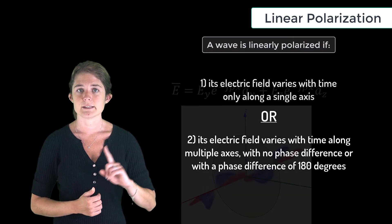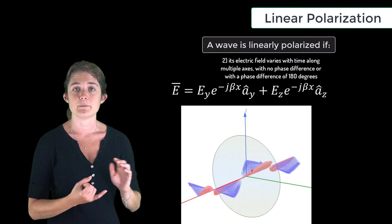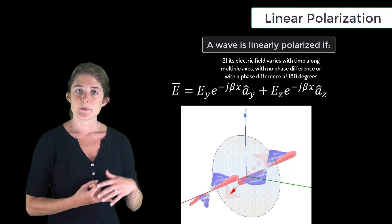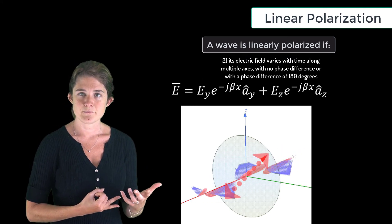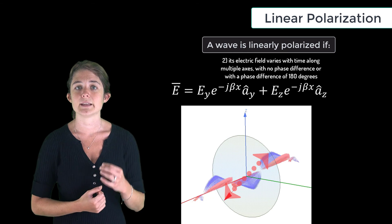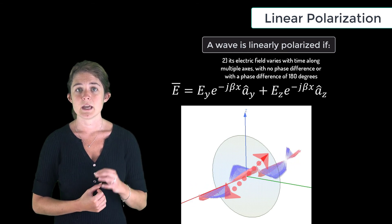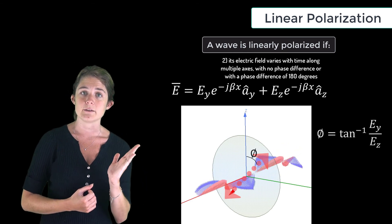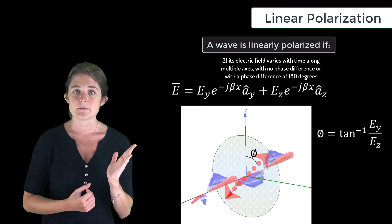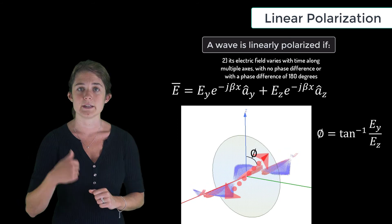For instance, this wave varies with time in both y and z, but the two components are in phase. We could further specify that the linear polarization of this wave is oriented at an angle phi from the z-axis, where phi equals the inverse tangent of Ey over Ez.